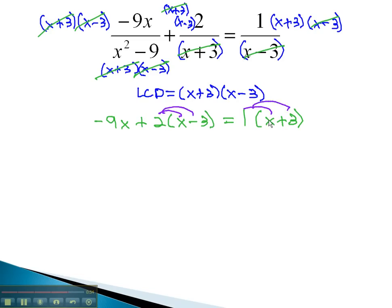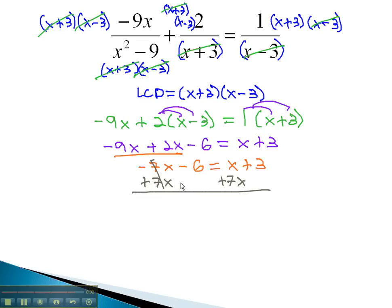We'll start solving by distributing through the parentheses, giving us negative 9x plus 2x minus 6 equals x plus 3. Combining like terms gives negative 7x minus 6 equals x plus 3. Moving the variable to one side by adding 7x gives us negative 6 equals 8x plus 3. Finally, it's a two-step equation, which we can subtract 3 to get negative 9 equals 8x, and finally, divide by 8 to get our final solution, x is equal to negative 9 eighths.